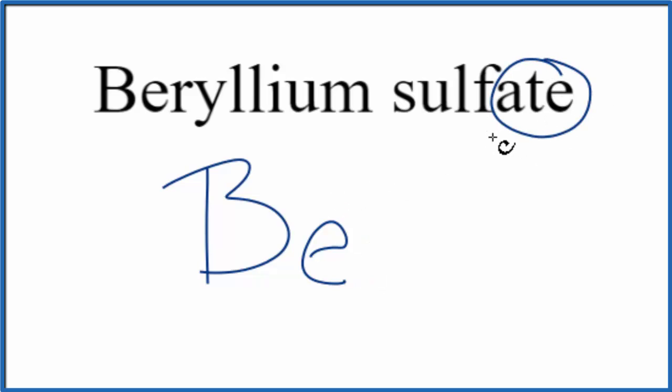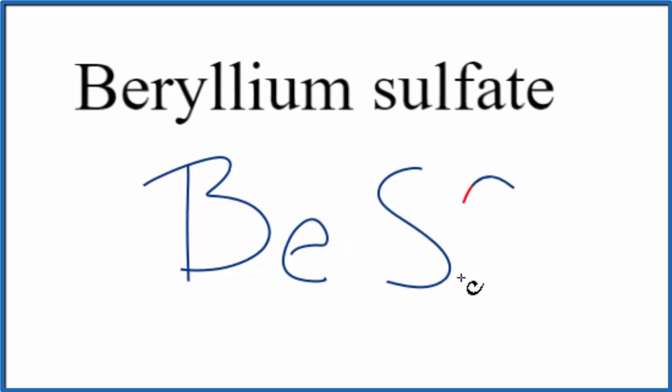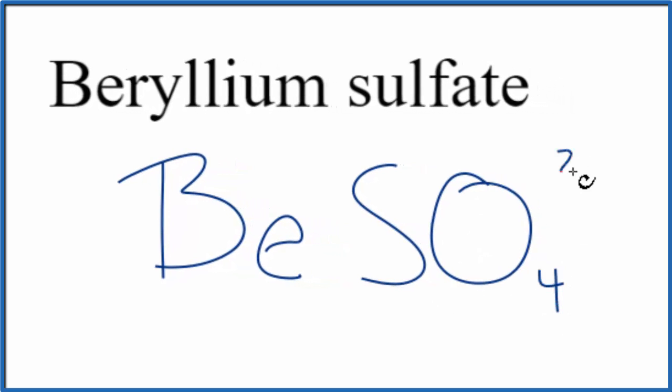Sulfate, we see this A-T-E on the end. That tells us that this is a polyatomic ion. We're not going to find this on the periodic table. So you either memorize that sulfate is SO4, and it has an ionic charge of 2-, or if you're allowed, you look it up on a table of polyatomic ions. I recommend memorizing the sulfate ion. It comes up a lot in chemistry.